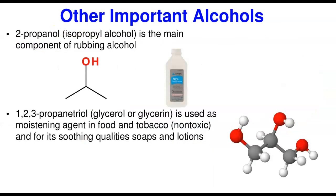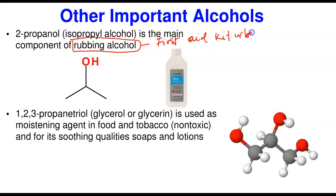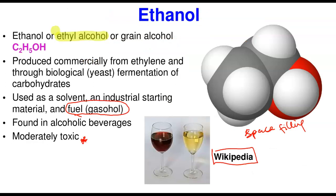Another important alcohol is 2-propanol, also called isopropyl alcohol, but commonly known as rubbing alcohol. You find this in most first aid kits or boxes. It can act as an antiseptic in cleaning minor wounds before the person gets to the hospital.